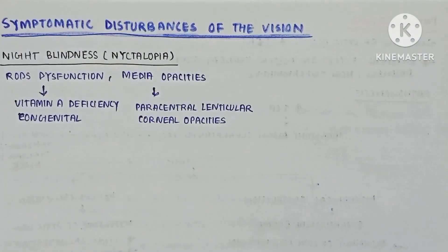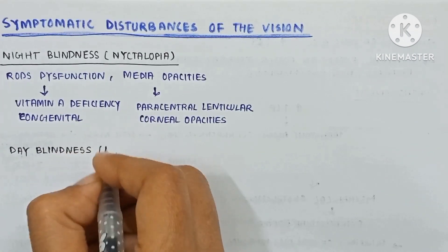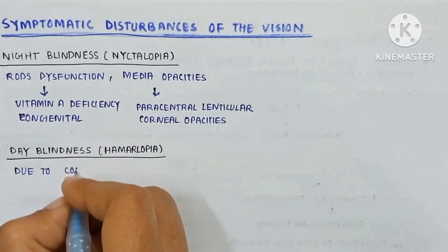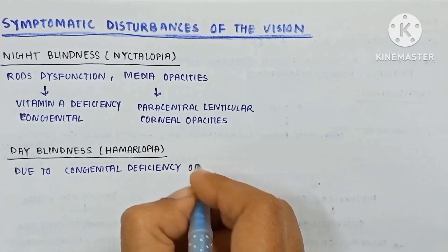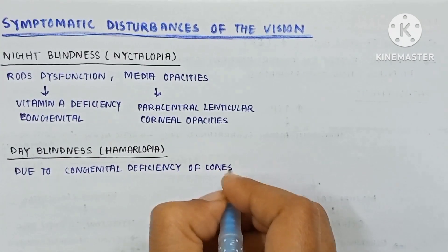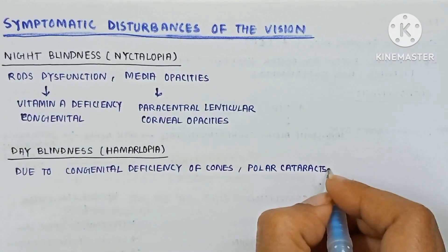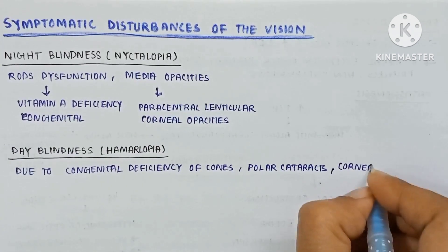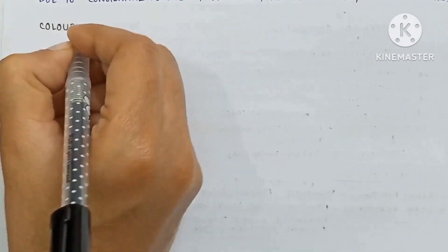The second is day blindness, which is also known as hemeralopia. It is due to congenital deficiency of the cones, polar cataract, or corneal opacity.